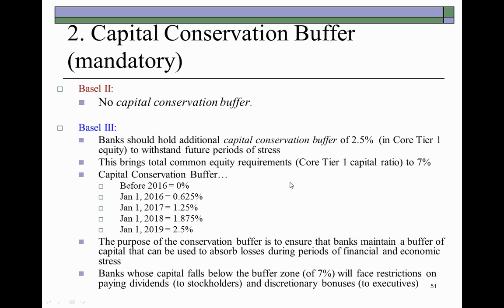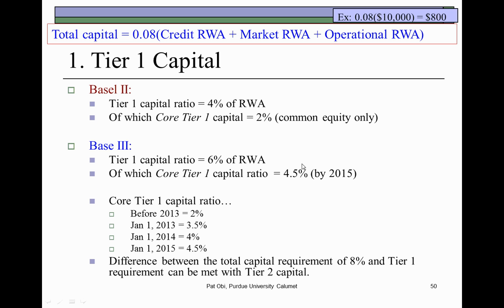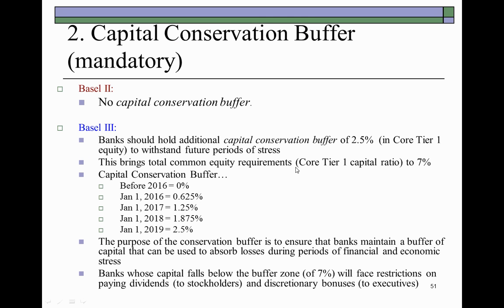Continuing to the second standard, which calls for a mandatory capital conservation buffer — there was none under Basel II. Under Basel III, it stipulates that banks should hold an additional capital conservation buffer of 2.5% in core Tier I equity in order to withstand future periods of financial stress. This brings the total common equity capital ratio from 4.5% to 7%, which is 4.5% plus this additional 2.5%.